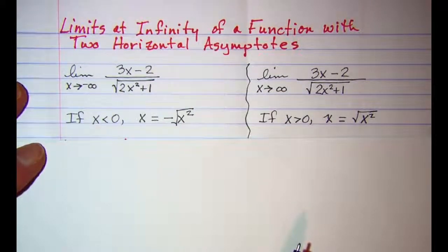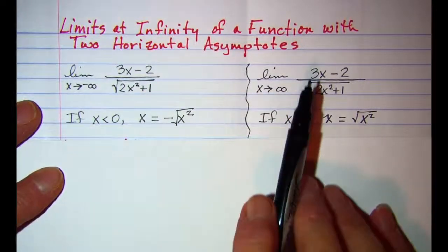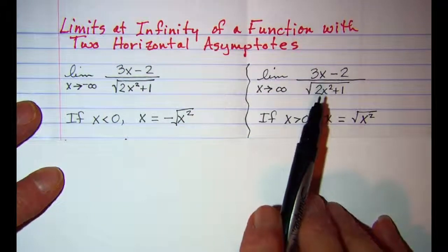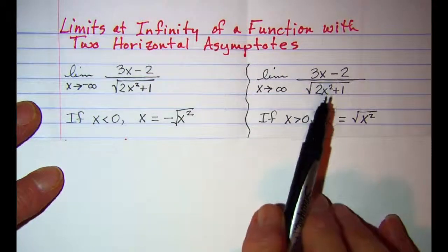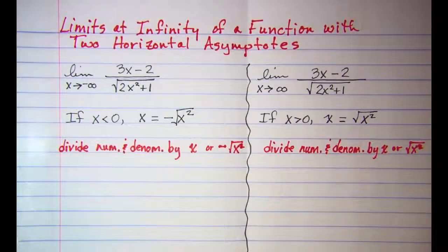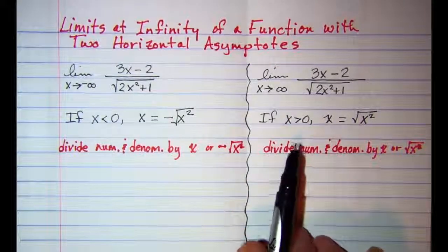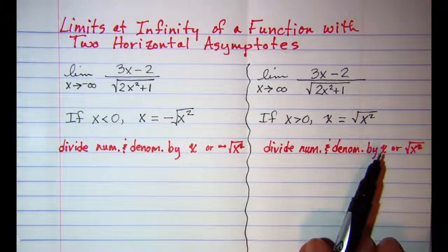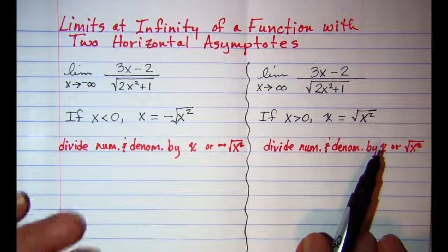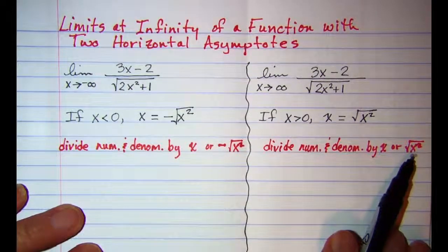To find the limit analytically, we need to divide the numerator and denominator by the highest power of x that's in the denominator. Let's do the limit as x approaches positive infinity first. We'll want to divide top and bottom by x, or equivalently the square root of x².